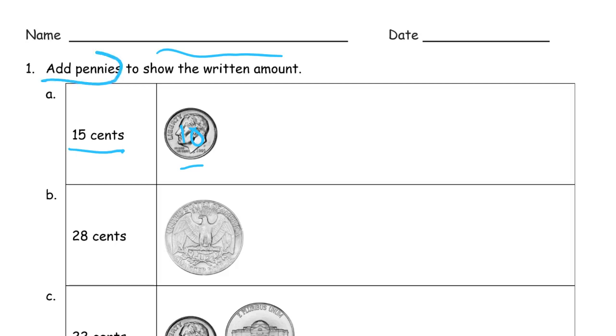It says we have to add pennies. We could draw a nickel, but it says pennies. So that's 11, 12, 13, 14. That's 14, 15.